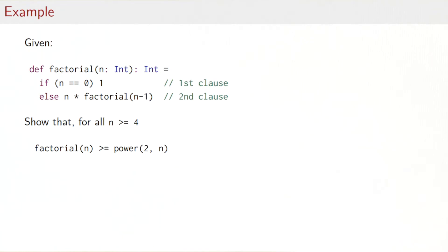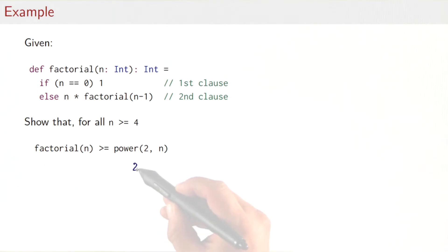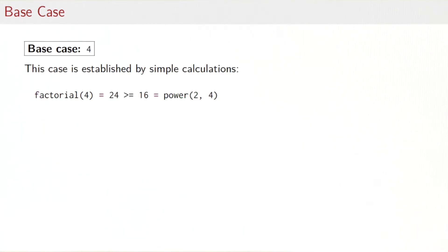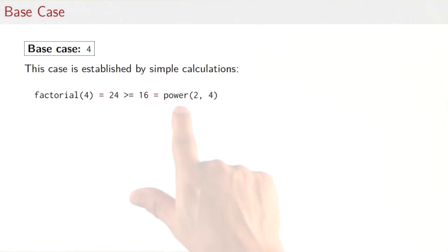Here's an example to recap natural induction. We are looking at factorial — here's the usual definition. We want to show that for all n ≥ 4, factorial(n) ≥ 2^n. We do that by proof of natural induction. The base case is n = 4, the smallest number we have to consider. We can do it by simple calculation: factorial(4) is 24, and 2^4 is 16. Since 24 ≥ 16, the case is established.